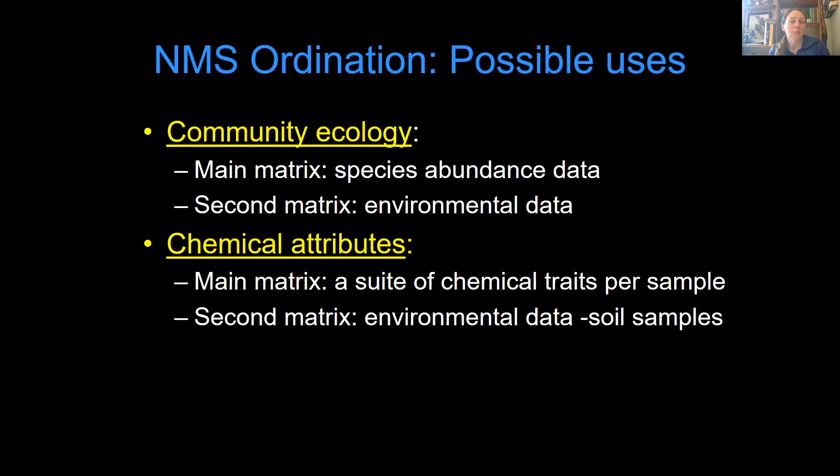But pretend that instead you're interested in a suite of chemical traits in some kind of sample. In your main matrix, you'd have all of the different chemicals that you measured. And in your second matrix, maybe you're looking at soil chemistry. So then you have, where did the soil come from? What was the latitude? What was the depth in the ground? How moist was it? Like all kinds of information about the soil that you're studying or the leaf chemistry or whatever. This tool is very applicable.